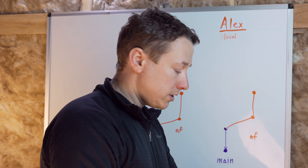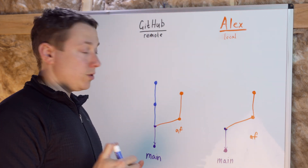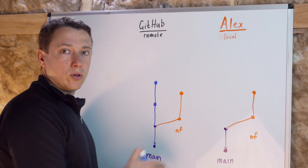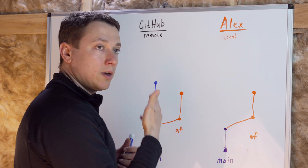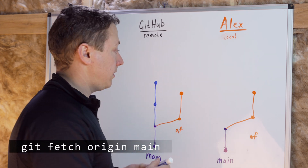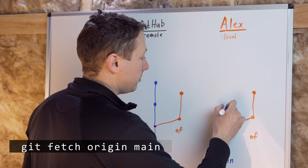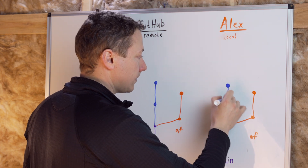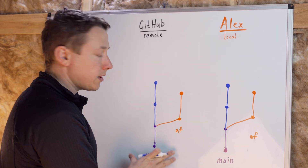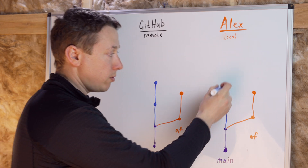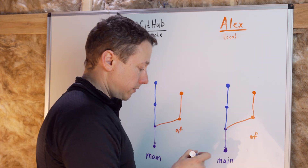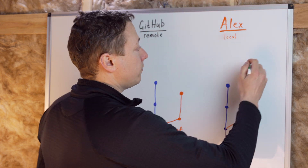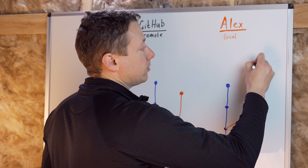Let's say you decided to go ahead and merge. First you need to download the latest changes from the main branch onto your local system. To do that, you run git fetch origin main, and that copies the latest commits into your local copy of the repository. Now your local copy looks exactly like remote. At this point, if you merge main into the feature branch, this will create a merge commit in your feature branch.